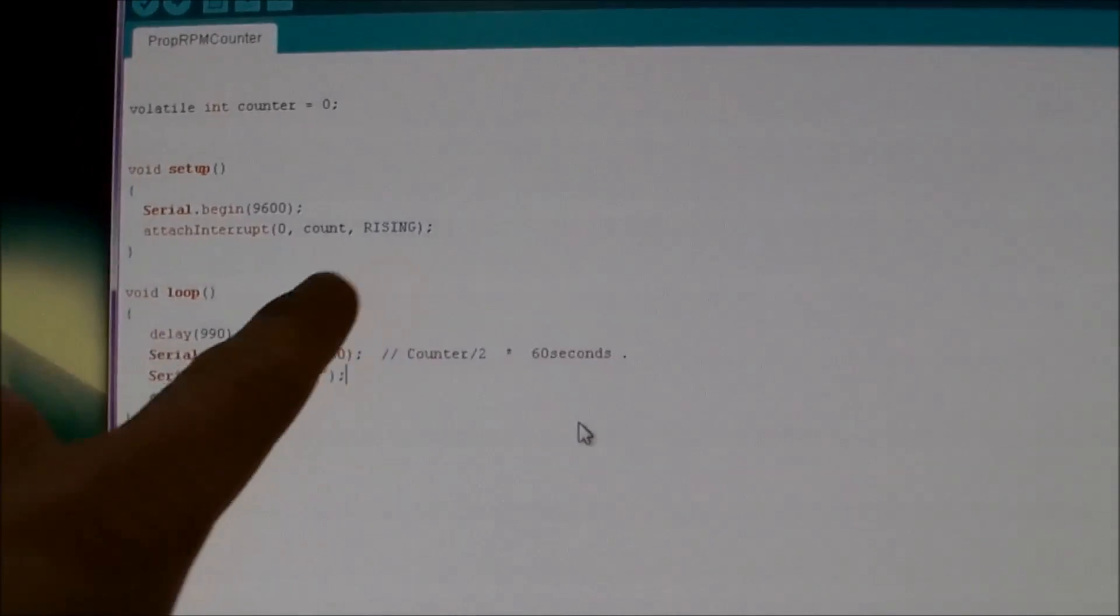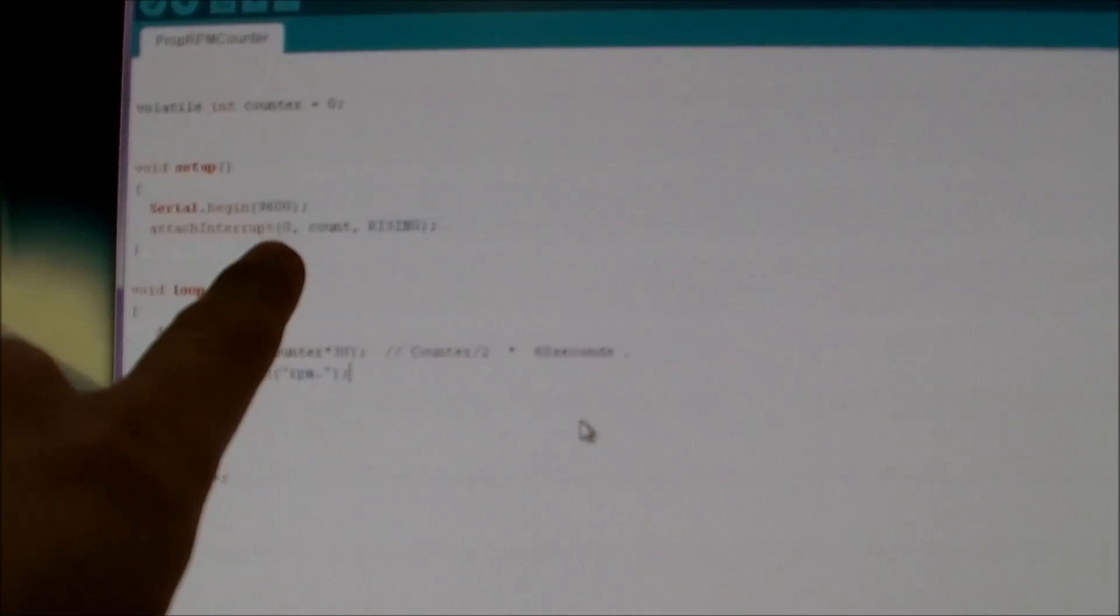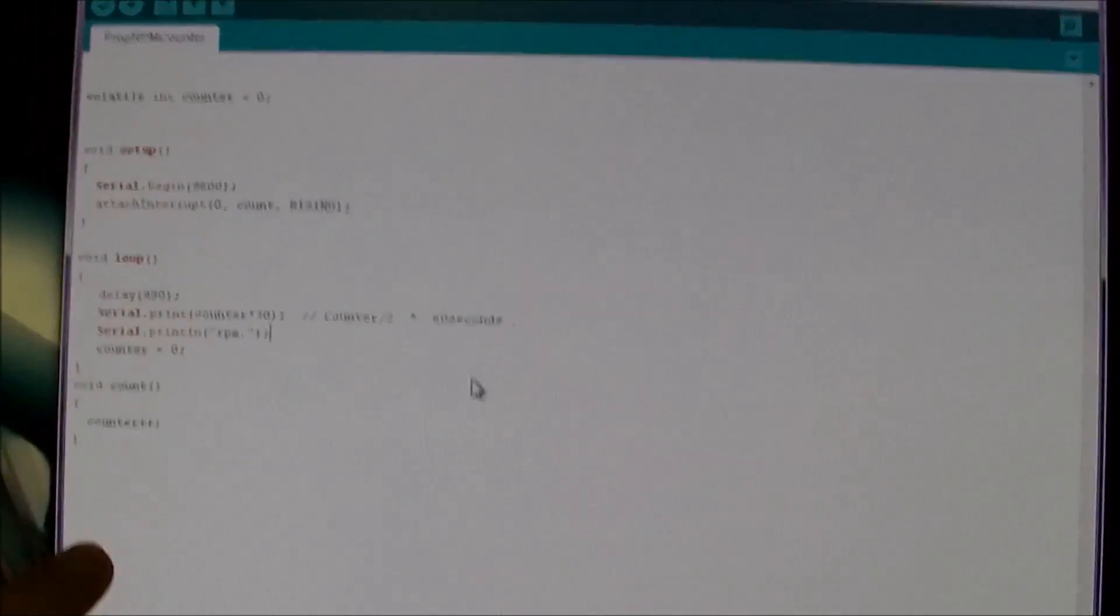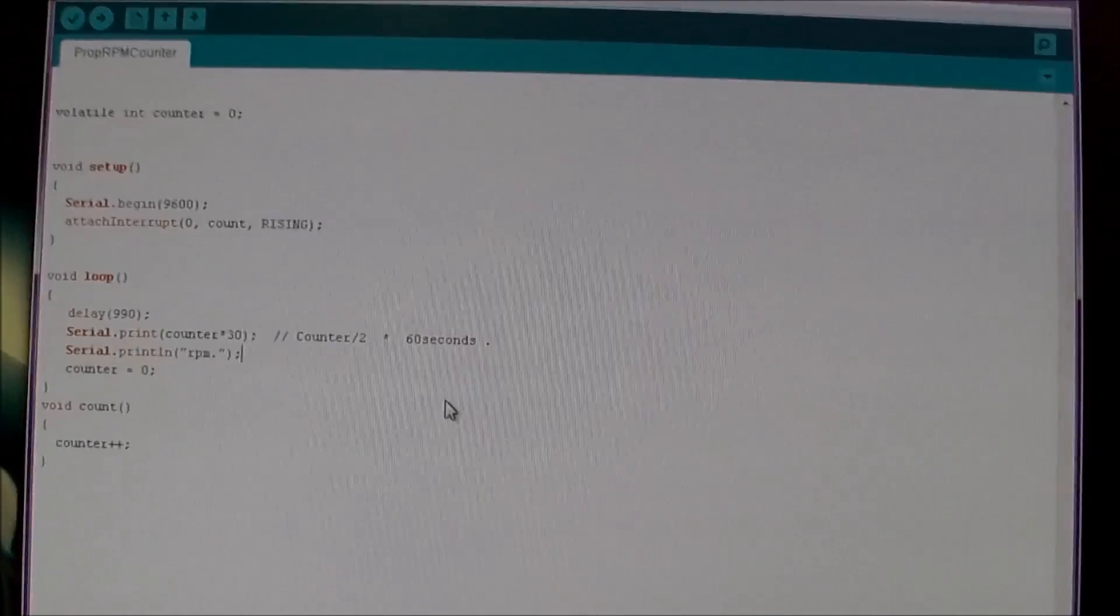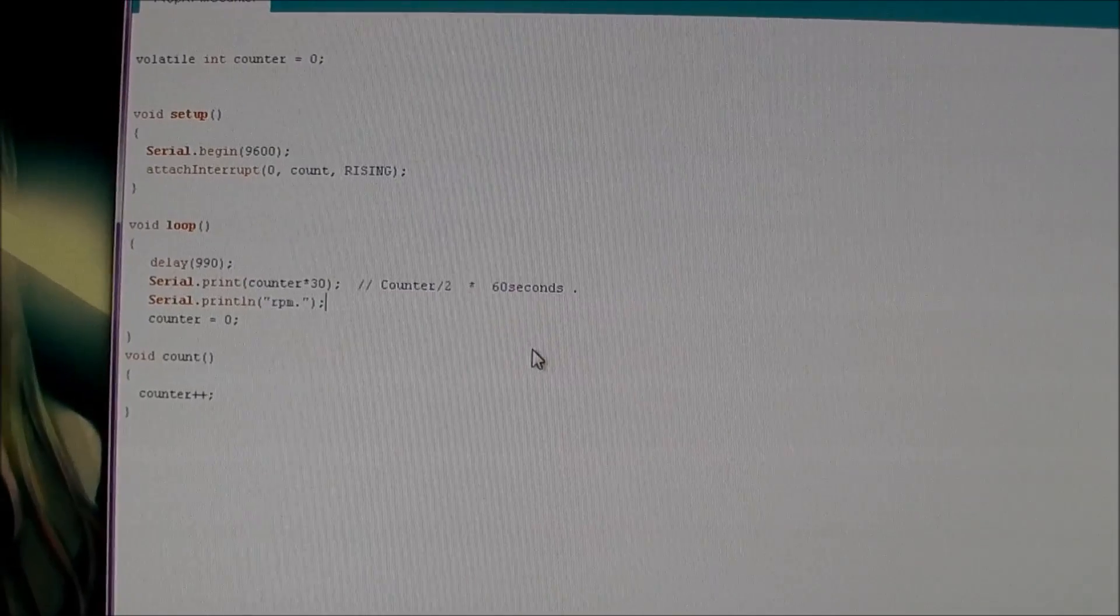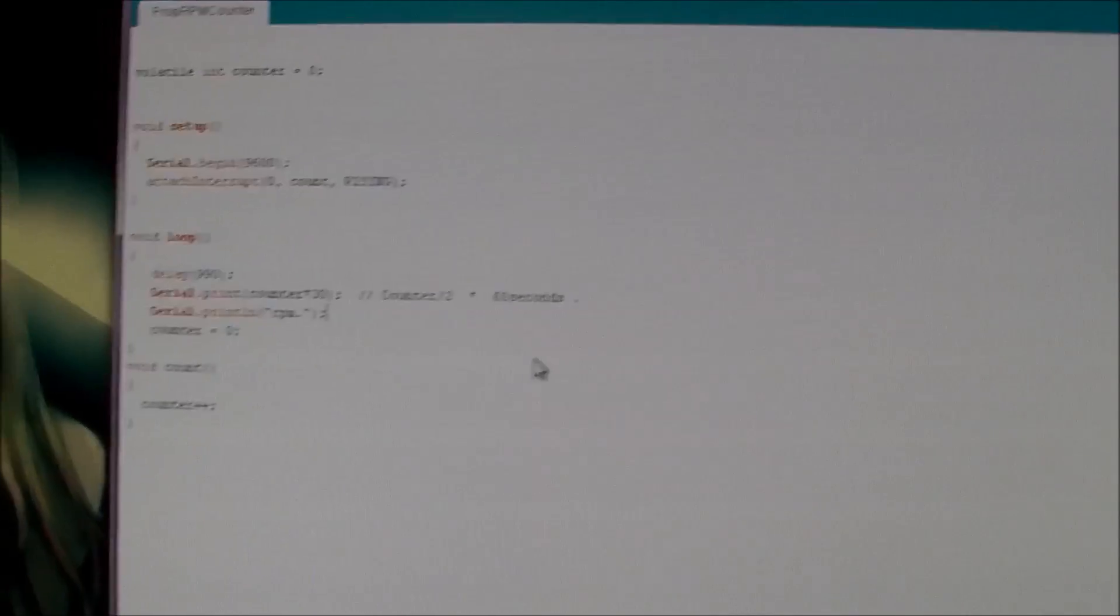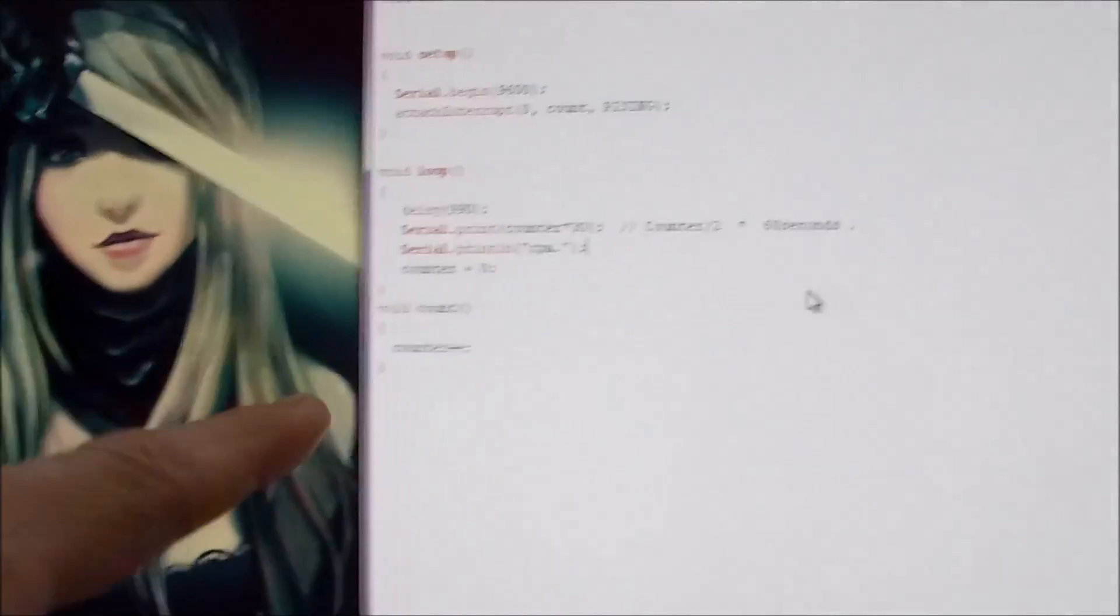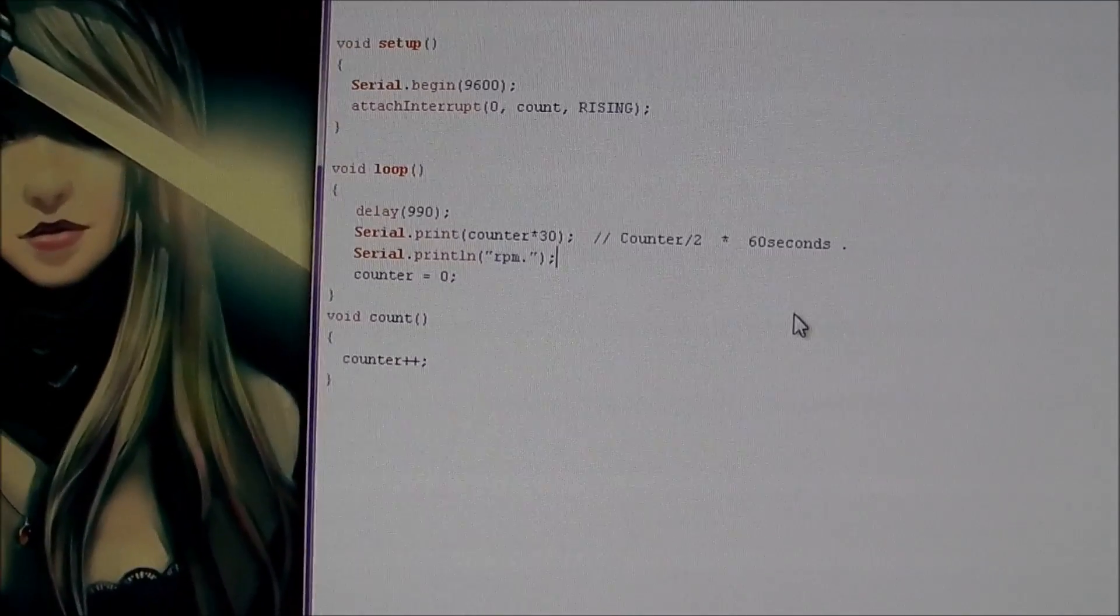What this basically does is that you declare an interrupt on the pin, on interrupt zero which is pin two of the Arduino. The function which you wanted to perform when the interrupt fires and I went on the rising edge. So what this basically means is that every time there's a logical change of low to high on pin two, then this function triggers the count which just increments the counter.